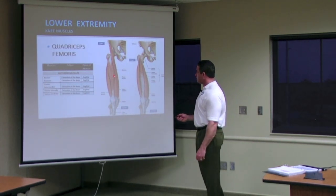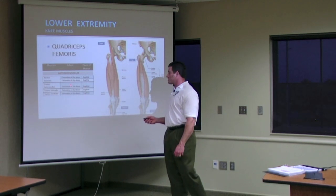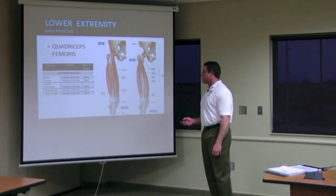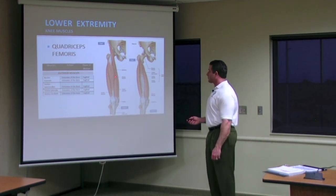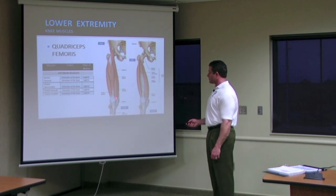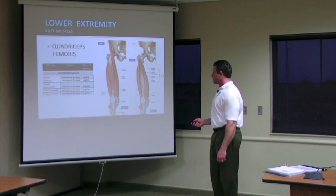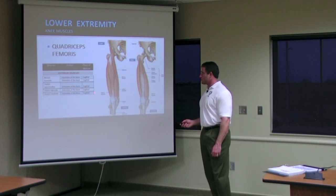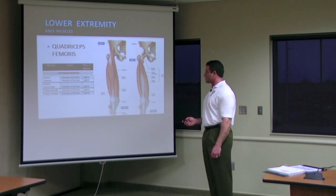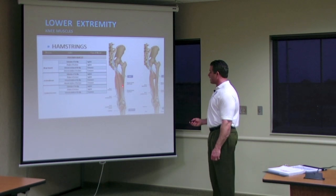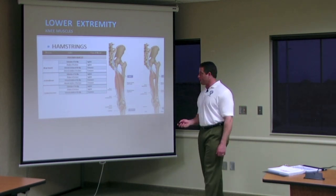The muscles that cause extension of the knee are your quadriceps. Three of your quadriceps are what we call one-joint muscles, and the fourth one is your rectus femoris, which is a two-joint muscle — which we'll touch on in a little bit.